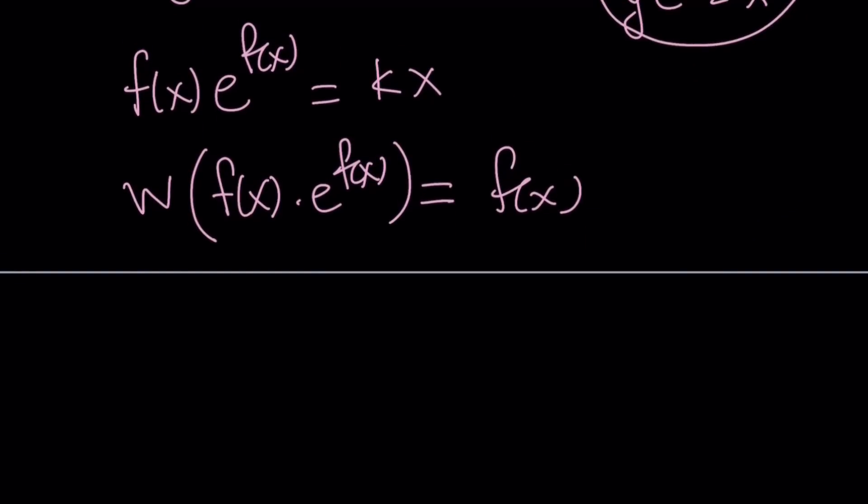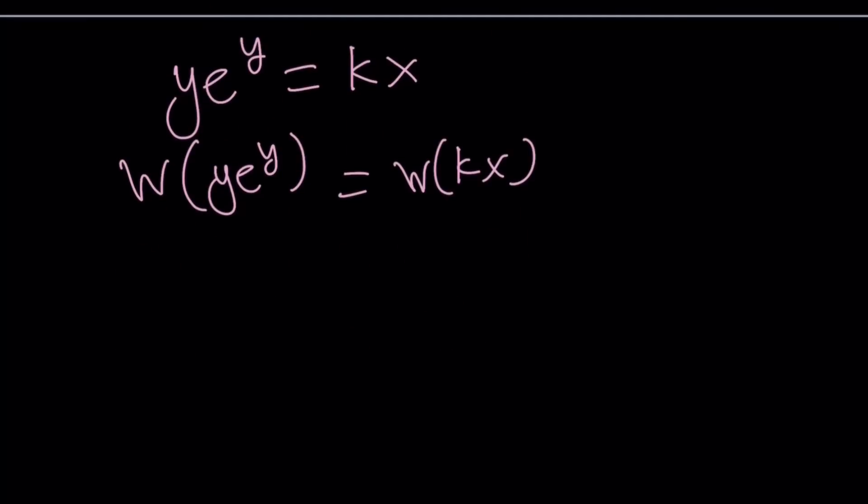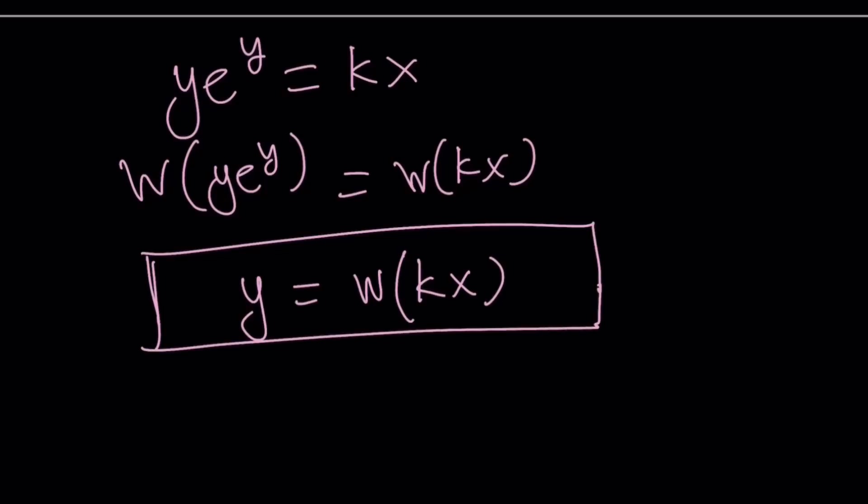I'm also going to show you, I'll share with you a link that kind of shows you the graph of Lambert's W function, the two branches. Okay. So what are we going to do then? We got this equation, y e to the y equals kx. We can Lambert both sides, W of y e to the y equals W of kx, and then by definition, W of y e to the y is just y, and y is going to be W of kx, where k is a constant. And that would give us basically the solutions in terms of x.